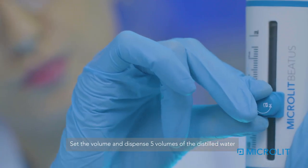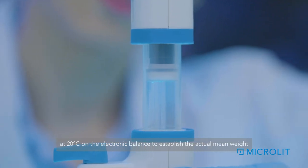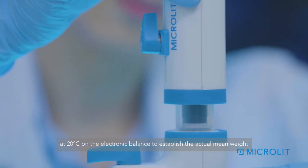Set the volume and dispense 5 volumes of the distilled water at 20 degrees Celsius on the electronic balance to establish the actual mean weight.